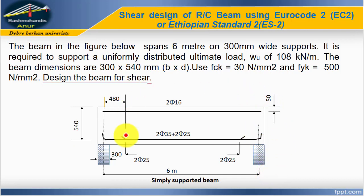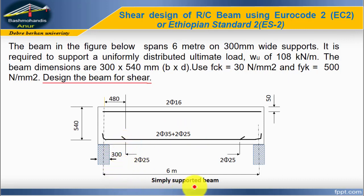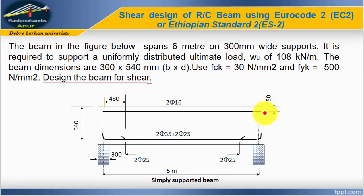This is the beam. You can see the top reinforcement, bottom reinforcement, curtailment procedure, and it is simply supported with a support width of 300 mm. The effective depth of the beam is 540 mm, and the cover is 50 mm.